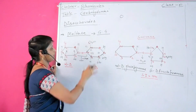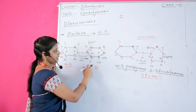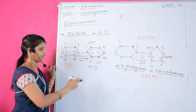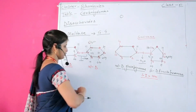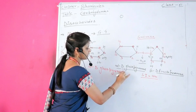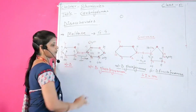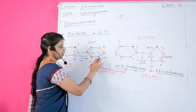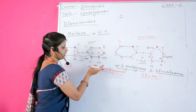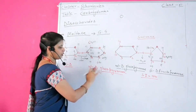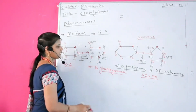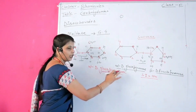This maltose sugar is formed by alpha-D-glucopyranose. Alpha means the hydroxyl group is present on the lower side. D means it shows right-side rotation — dextrorotatory. That's why it is represented as alpha-D-glucopyranose. Gluco means it is the ring structure of glucose, and pyranose means hexagonal structure. So it is called alpha-D-glucopyranose.